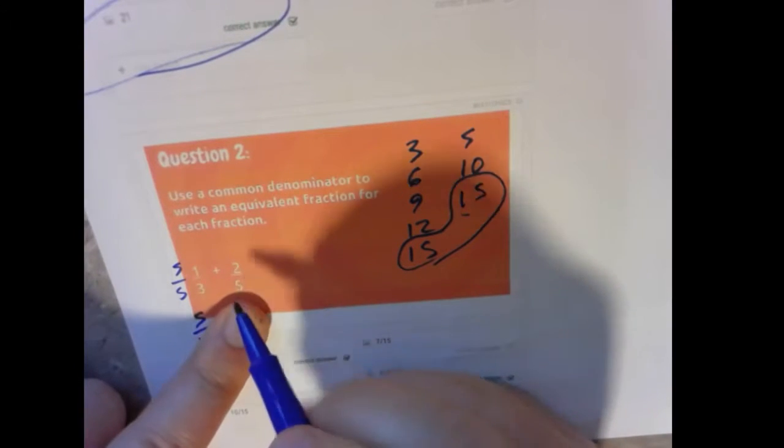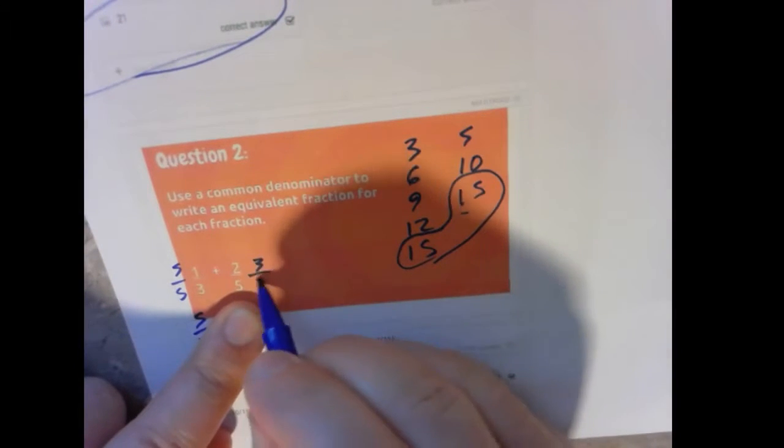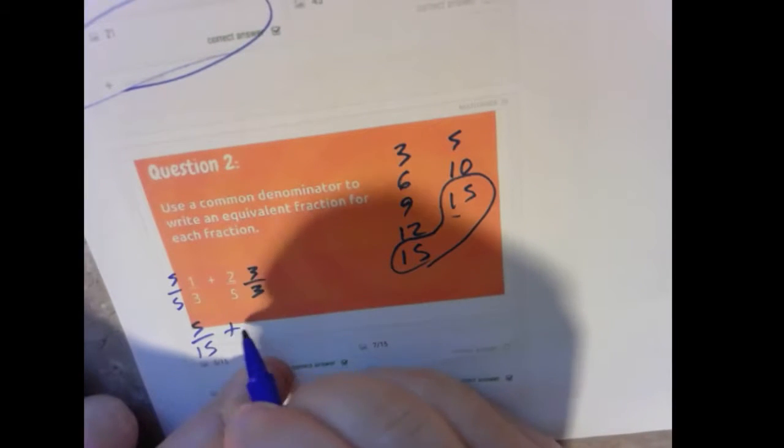Now this one, how do I go from 5 to 15? I multiply it by 3 over 3. So 2 times 3 is 6, 5 times 3 is 15.